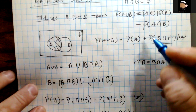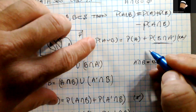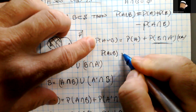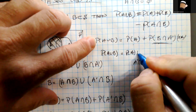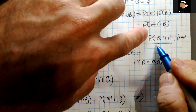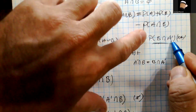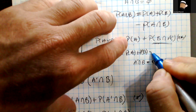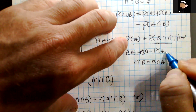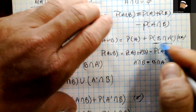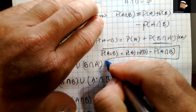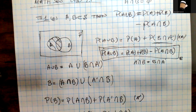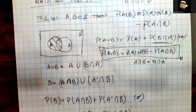Plugging that result into the double-star equation: P(A ∪ B) = P(A) + P(B ∩ A-complement) = P(A) + P(B) − P(A ∩ B), which was exactly what we were hoping to show. I hope that's clear — see you in the next video.